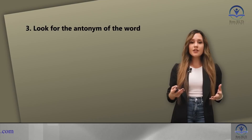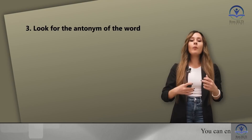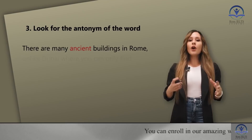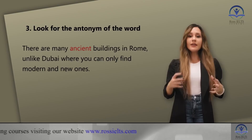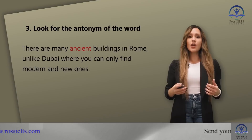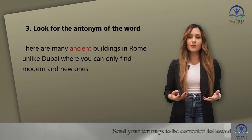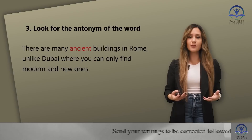The third step is to look for the antonym of the word. Sometimes you are given a word you don't know, but if you keep reading you may find a word with the opposite meaning, which will give you the definition of the difficult word. For example: there are many ancient buildings in Rome, unlike Dubai, where you can only find modern and new ones. You may not know the meaning of 'ancient,' but the word 'unlike' always shows contrast, so what comes after can be the antonym of 'ancient.' As 'ancient' is an adjective describing buildings, 'modern' and 'new' are its antonyms — and eventually we understand that 'ancient' means old.